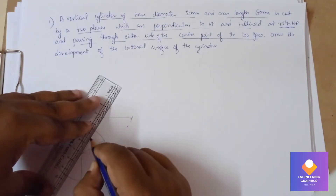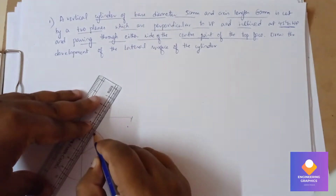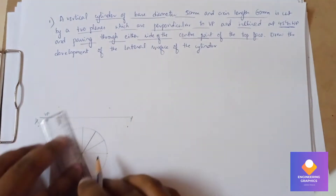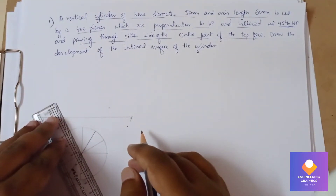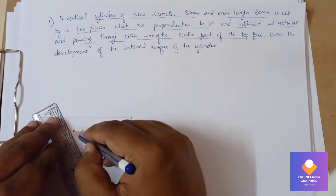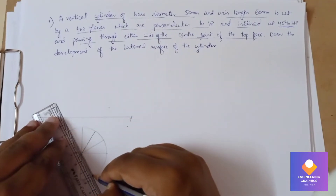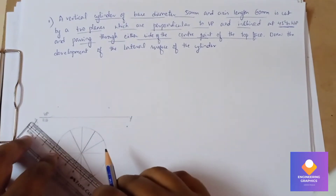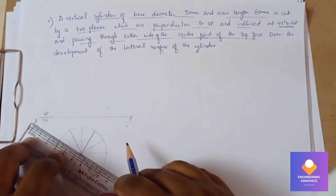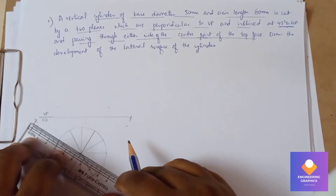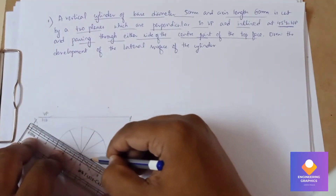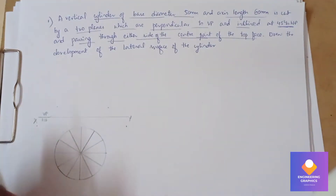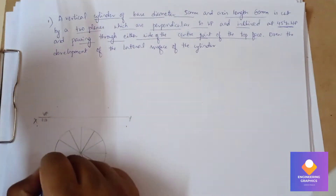Here also draw a line passing through this angle point. Same way here also for 150 degrees, draw the angled line.